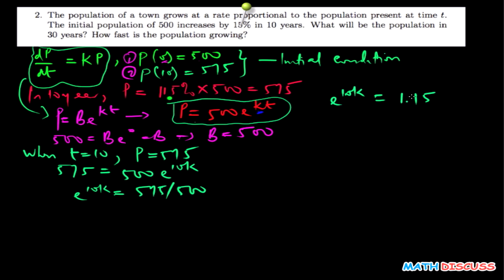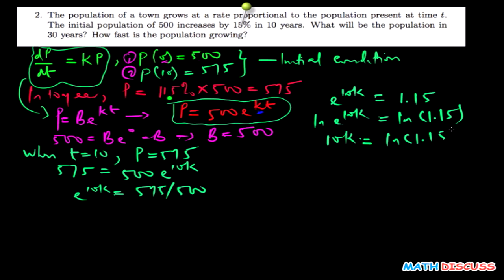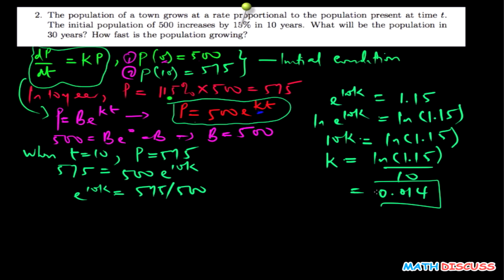How then do you find k? You take the natural logarithm of both sides. So we have the natural logarithm of 1.15, which gives us 10k equals ln(1.15). Therefore k equals the natural logarithm of 1.15 divided by 10, and that gives us 0.014. This is the value of k.